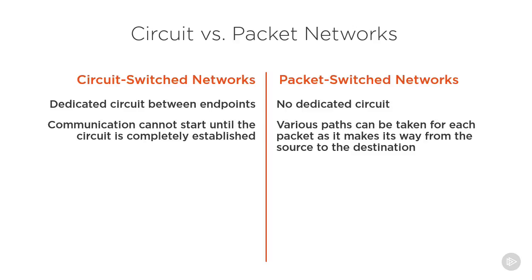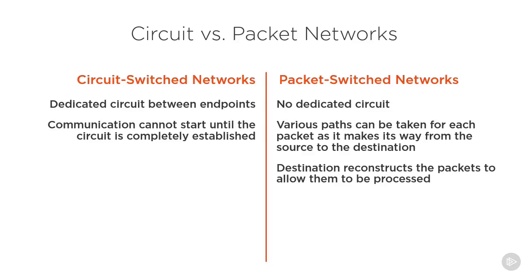Packet switch networks also require the destination to reconstruct the packets before they can be processed, since they could arrive to the destination not in the proper order. An example of a circuit switch network could be the traditional analog phone lines, while an example of a packet switch network could be your system's local area network.